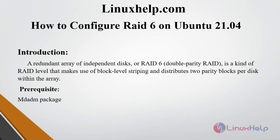A redundant array of independent disks, or RAID 6 double parity, is a kind of RAID level that makes use of block-level striping and distributes two parity blocks per disk within the array.